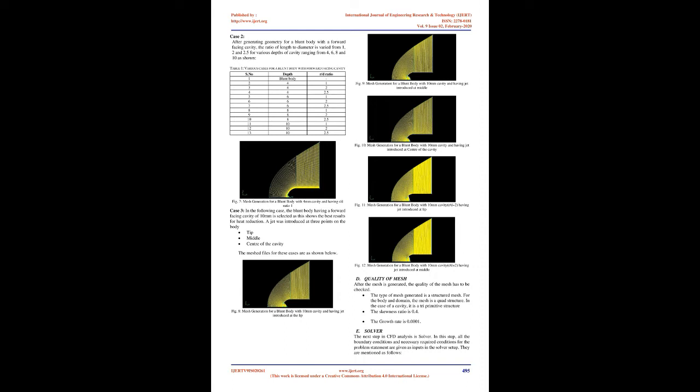Another technique to reduce aerodynamic heating is the opposing jet technique. The total pressure of the opposing jet is an important parameter. Coolant gases like N2 and inert gases are injected, helping to create a recirculating region which cools down the heating produced at the nose of the vehicle. In this paper, a CFD analysis is done on a blunt body alone, a blunt body with a forward-facing cavity, and a blunt body with a forward-facing cavity combined with an opposing jet. The combined thermal protection system reduces much of the aerodynamic heat, as proved in this paper.